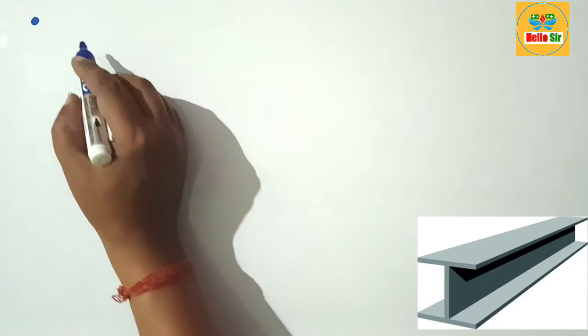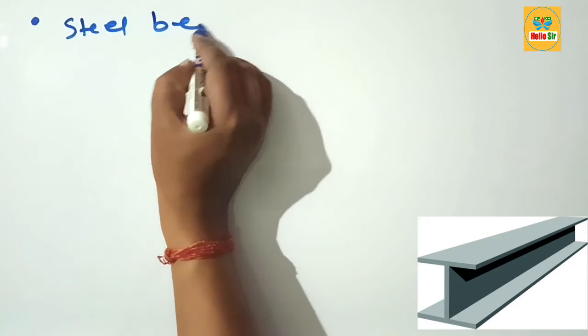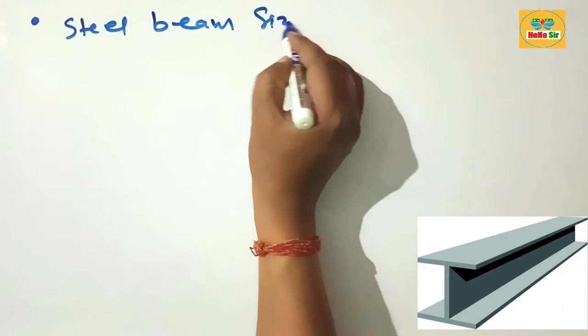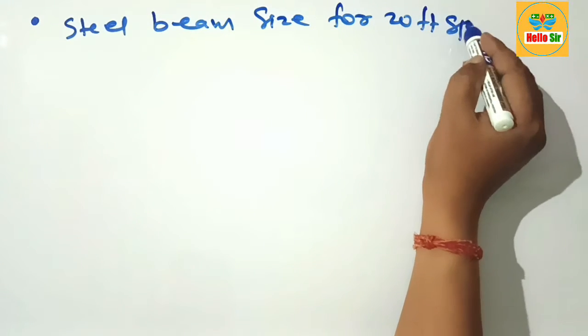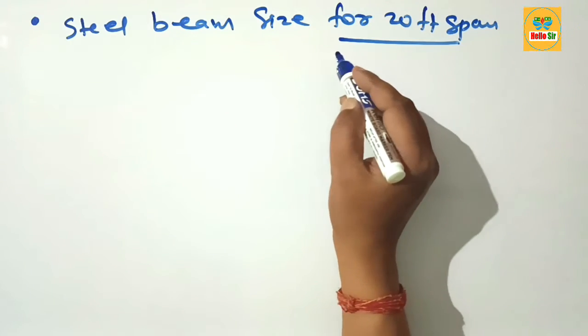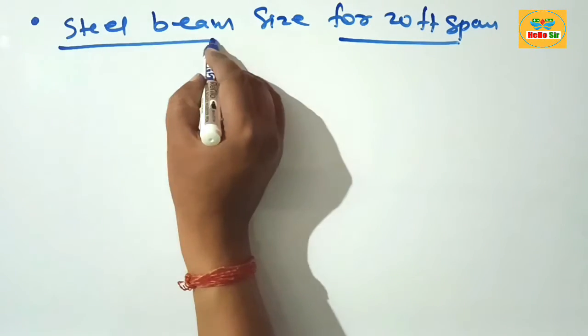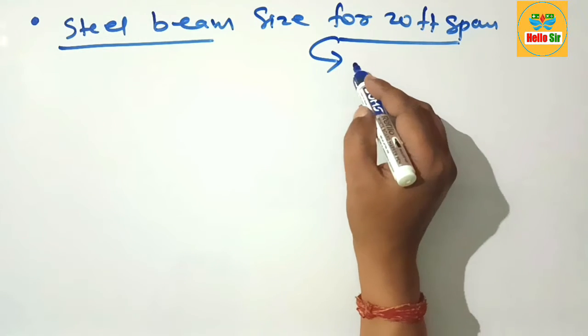Hi guys, today in this video we'll discuss steel beam size for a 20-foot span. Here you have a span of about 20 feet in length, and the type of beam we're using is a steel beam. As you know, American wide flange beams are also known as W beams.